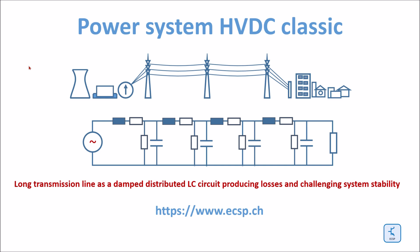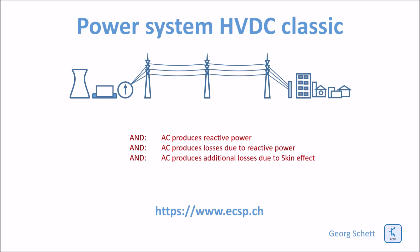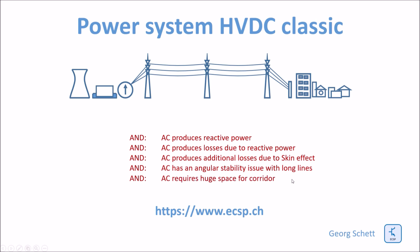Very long transmission lines above around 1000 km challenge system stability. AC produces reactive power and losses due to reactive power. It produces additional losses due to the skin effect — an effect which reduces the cross-section of a conductor utilized at higher frequencies. AC also has angular stability issues with long lines and requires huge space for the corridors.